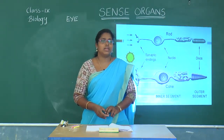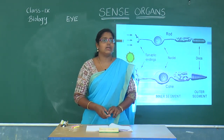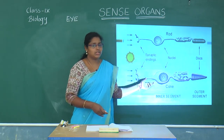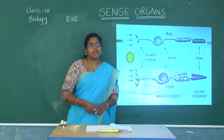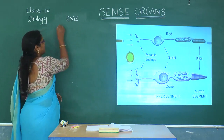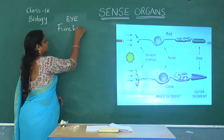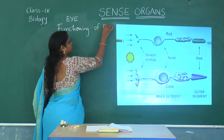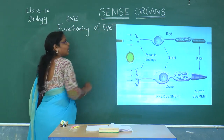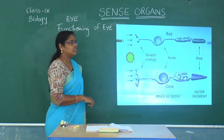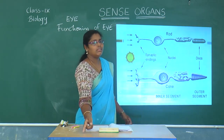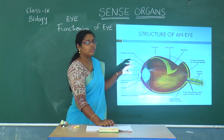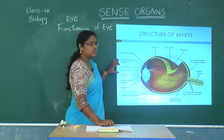Till now we have discussed the structural aspects of rods and cones, and next we will see the functioning of the eye — how is the eye able to sense information. When we see this picture, we have already discussed the parts of the eye.